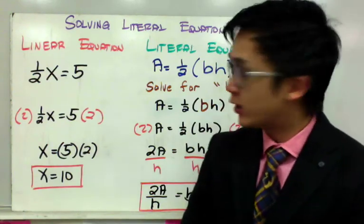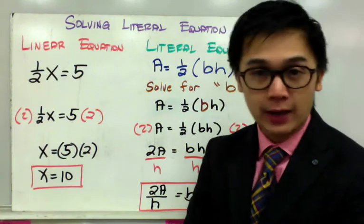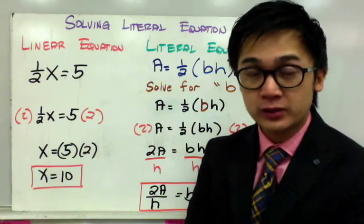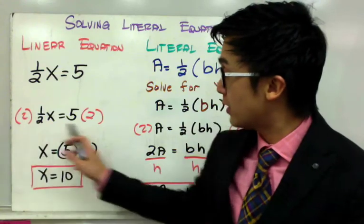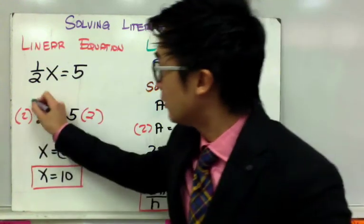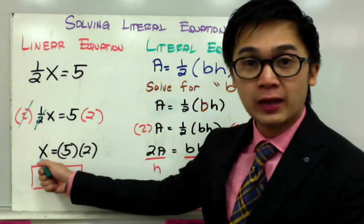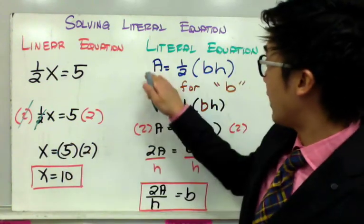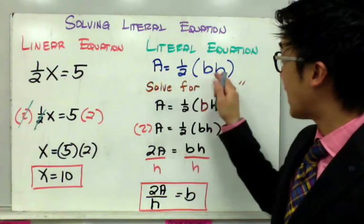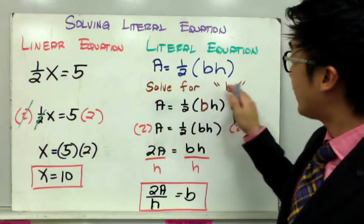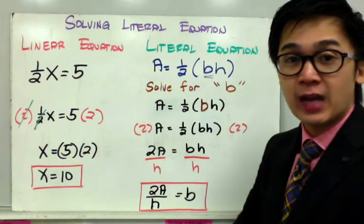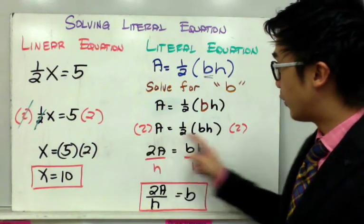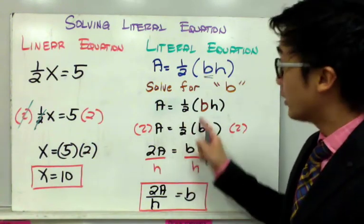In a linear equation, you've encountered problems like one half X equals 5. If we want to get rid of one half so that X is by itself, we need to multiply both sides by the reciprocal, which is 2. One half times 2 cancels out, leaving X by itself, and you end up multiplying 5 and 2, which gives 10. Relating this to literal equations, consider the area of a triangle given by A equals one half B times H. If we want to solve for B, we need to get rid of one half and H. To do that, our first step is getting rid of the fraction.